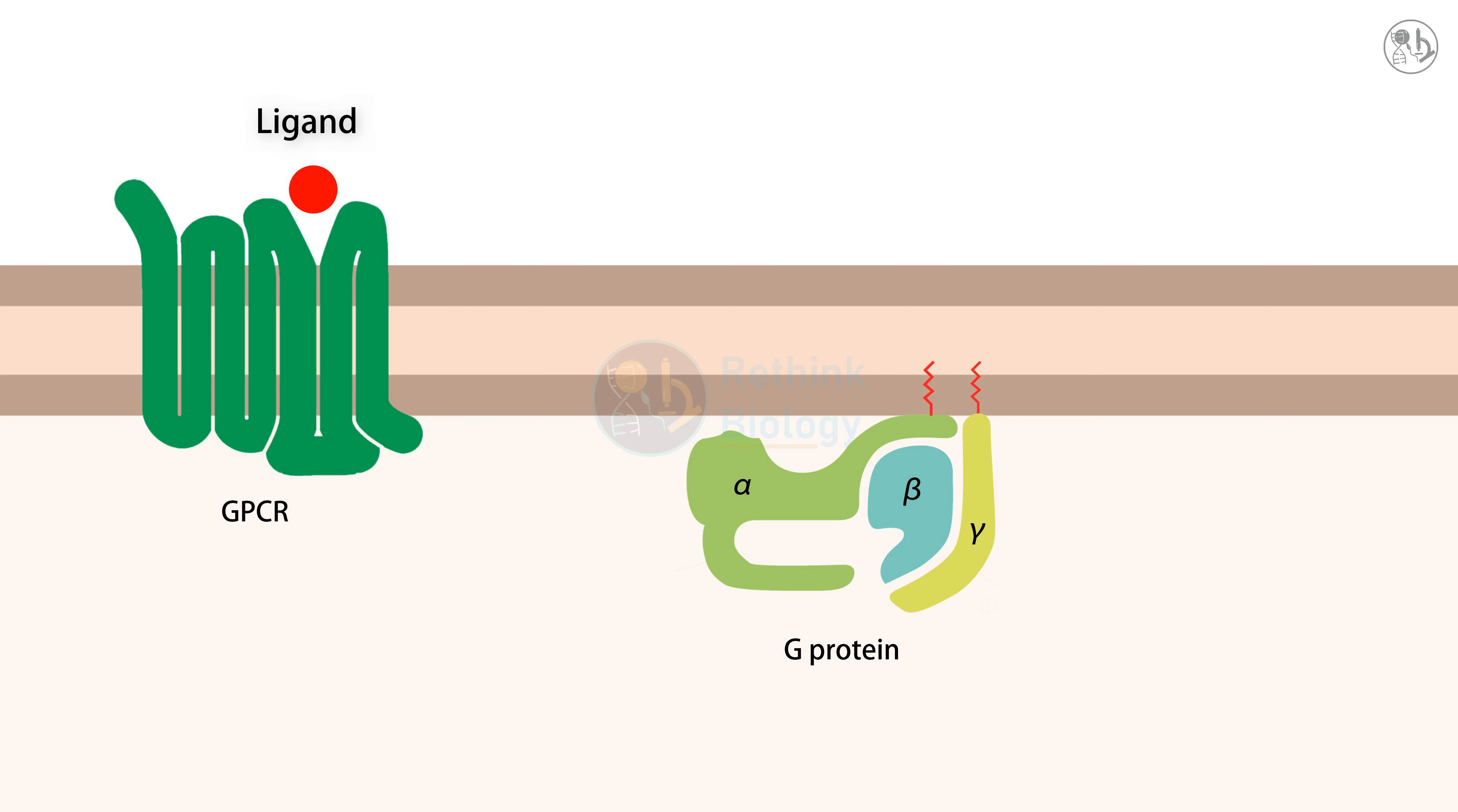When a ligand binds to a GPCR, it changes the conformation of the receptor, exposing a site on the cytoplasmic side that can interact with a G protein.